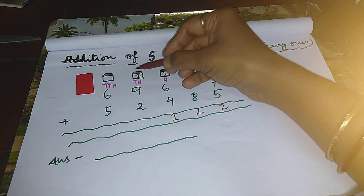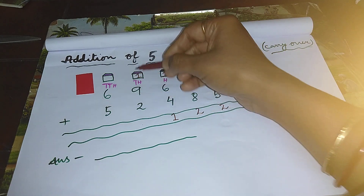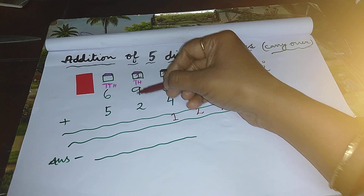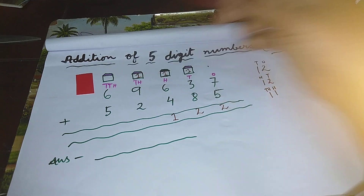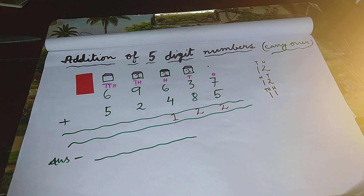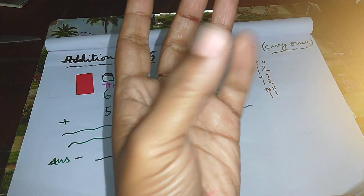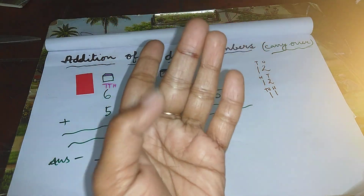Now add all these digits that belong to thousand's place. The first digit is one — count one. The next digit is nine, so count more nine lines: one, two, three, four, five, six, seven, eight, nine.